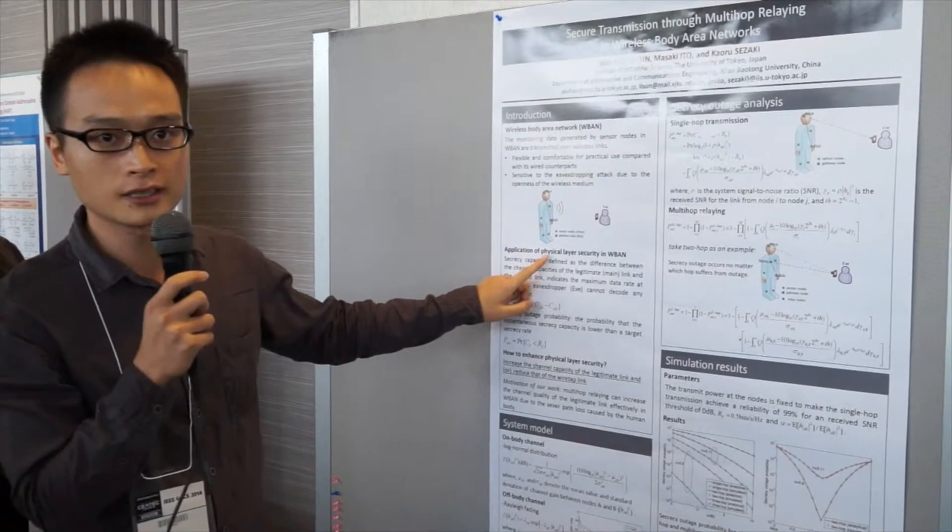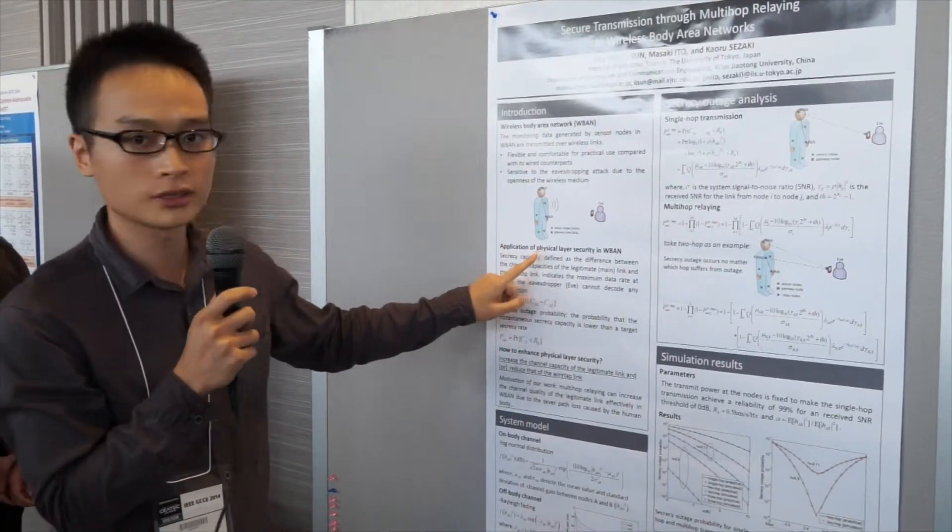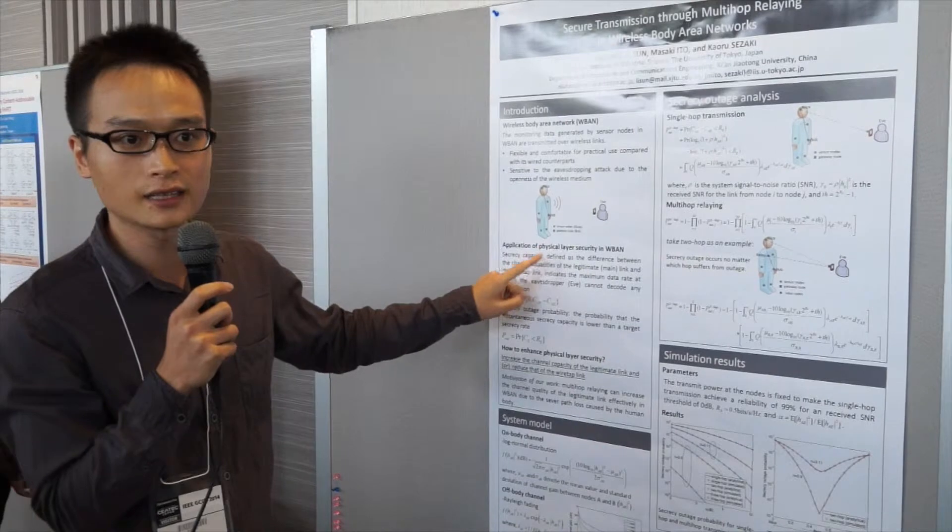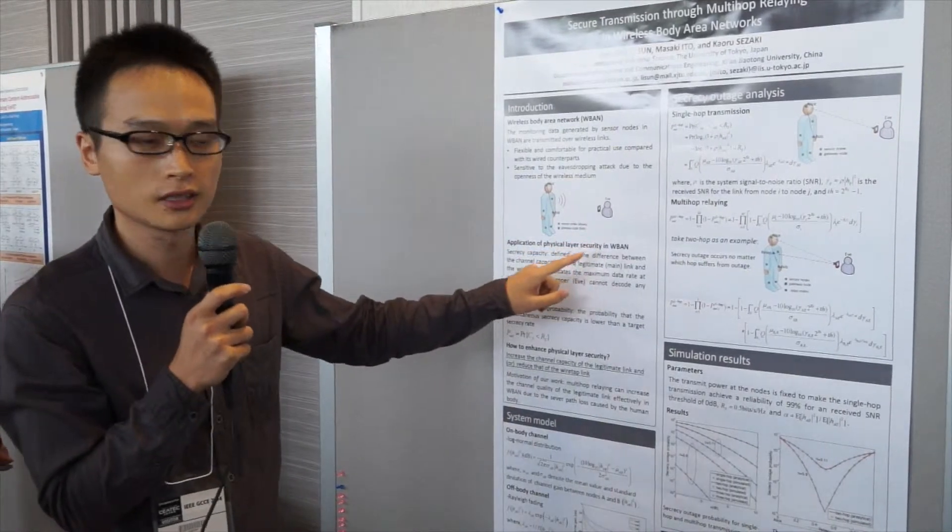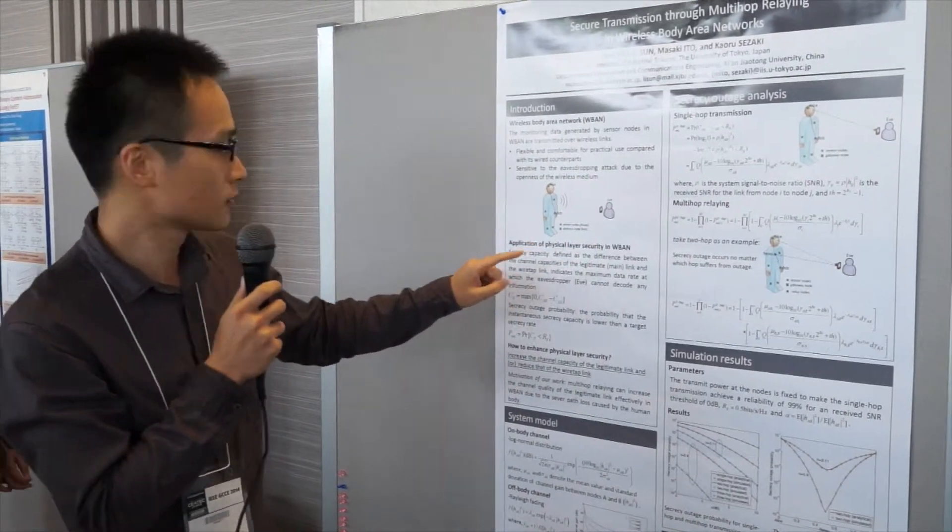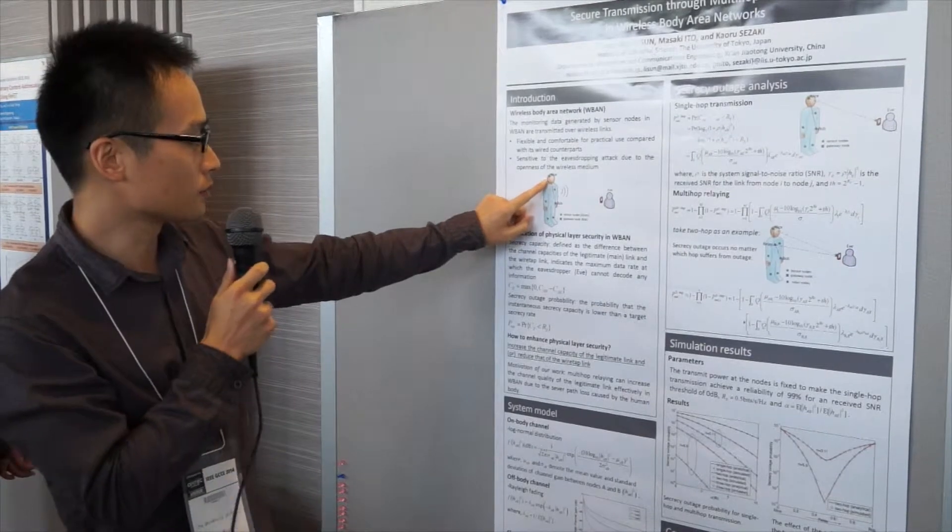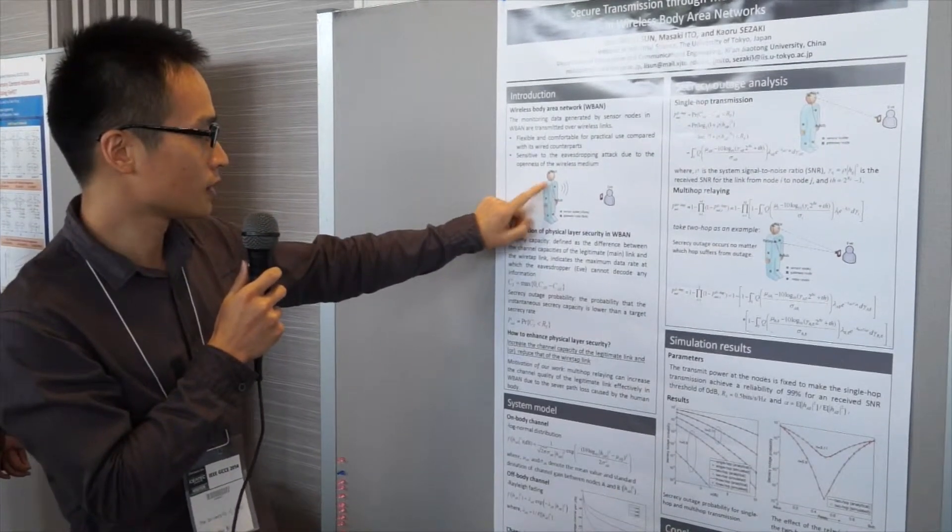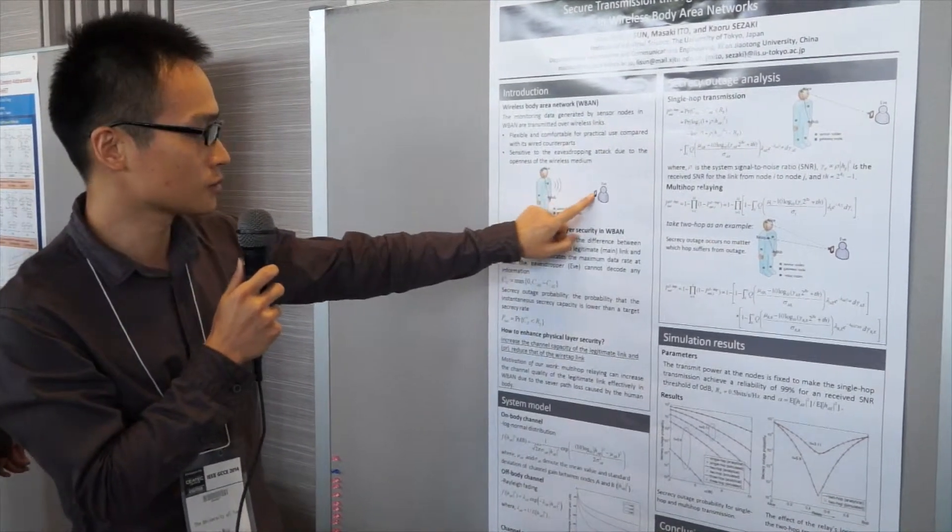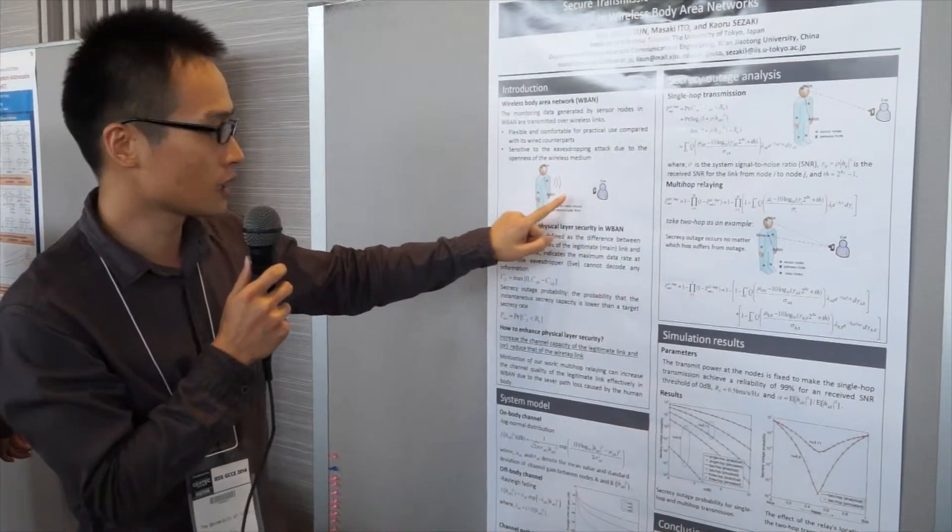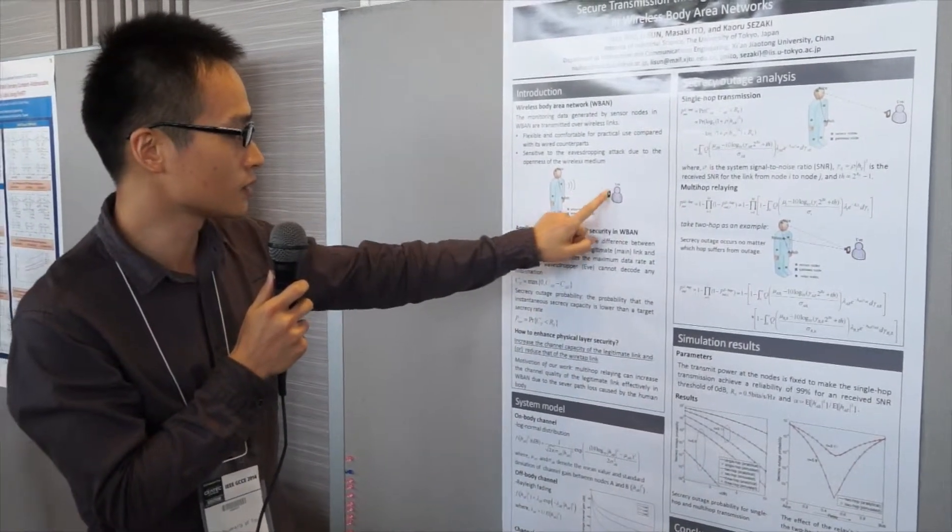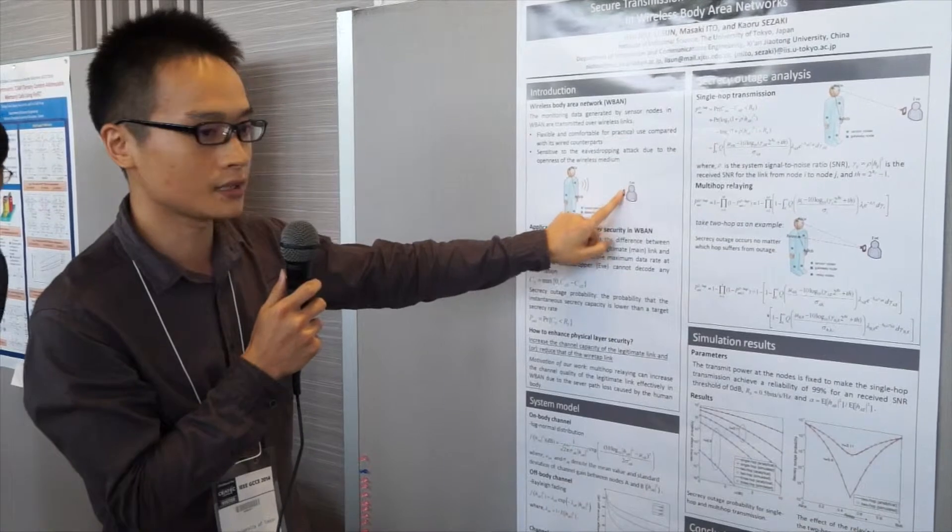The theory is based on physical layer security, which utilizes the wireless channel fading to secure transmission. Briefly speaking, if the channel quality between wireless to Bob is better than that between wireless to Eve, some information can be transmitted that cannot be decoded at Eve.